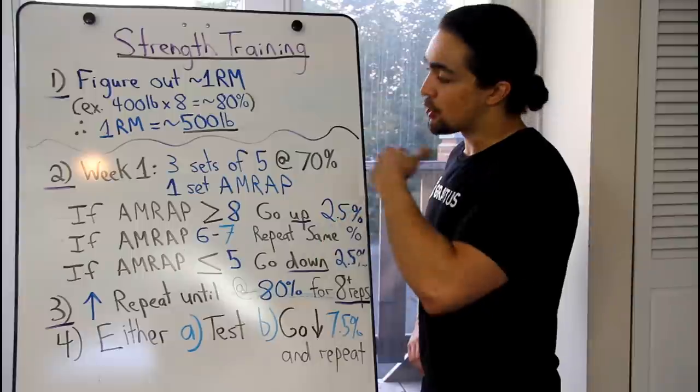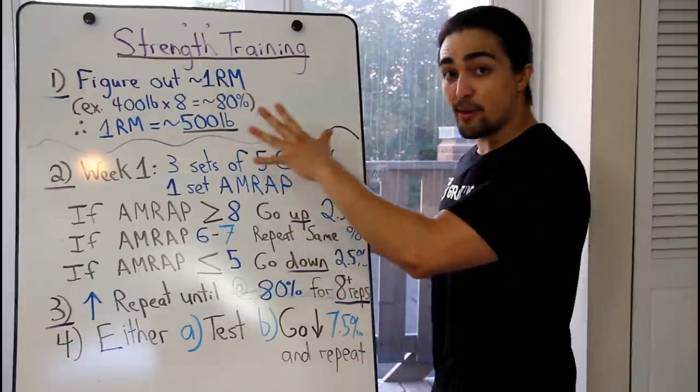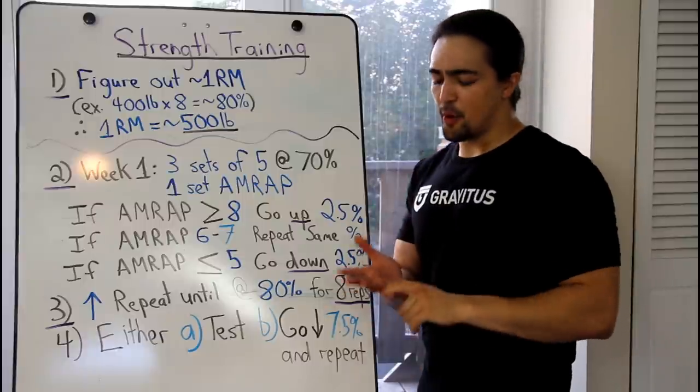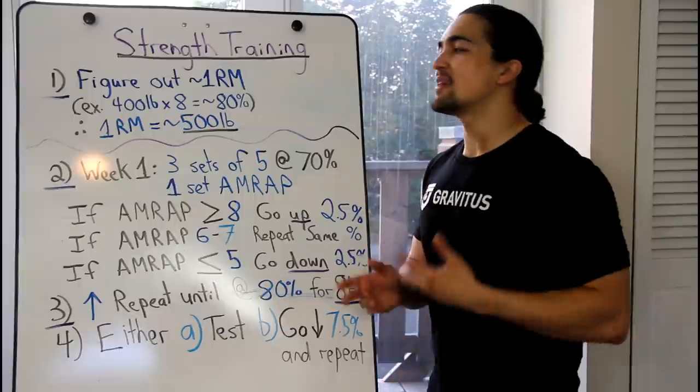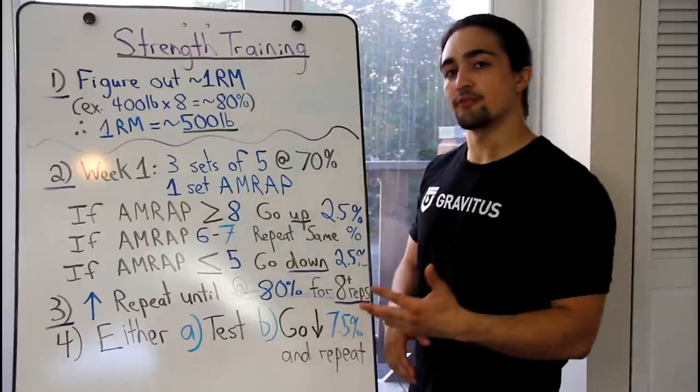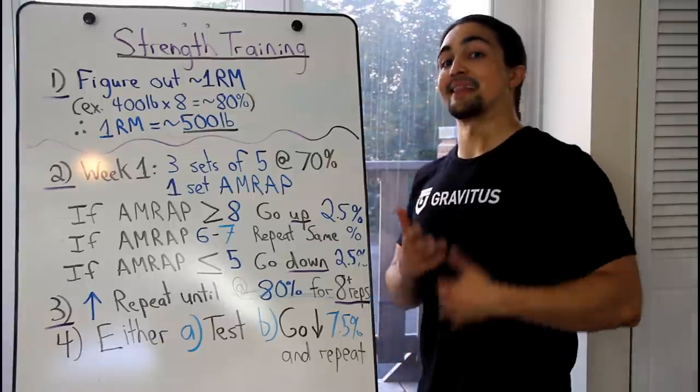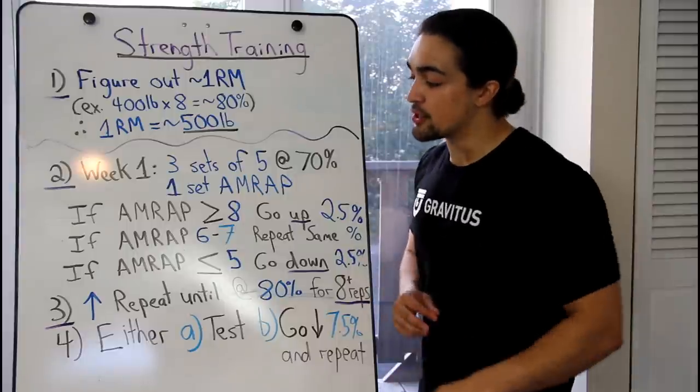As long as it doesn't interfere with any of this stuff, you can absolutely increase the volume, increase the accessory work. I don't want to increase the main movement, that's set in stone. But if you want to do additional, let's say, back work, shoulder work, arm work, things like that, so fluff and puff, just for aesthetic purposes, for hypertrophy, absolutely. Add in a fifth day where you do light work, weak areas that you want to improve upon, you can totally do that.